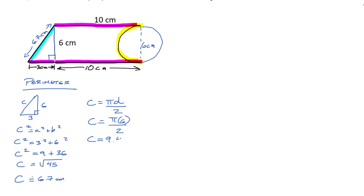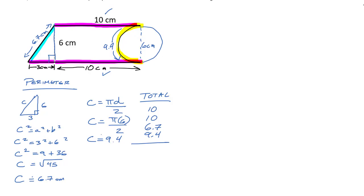That 9.4 is the curved semicircle portion. Adding up all the outside pieces: 10 plus 10 plus 6.7 plus 9.4 gives a total perimeter of approximately 36.1 centimeters.